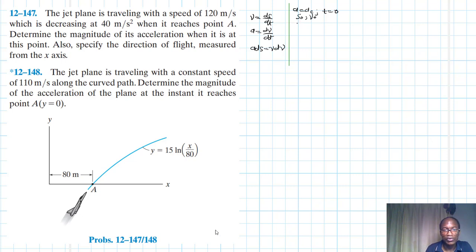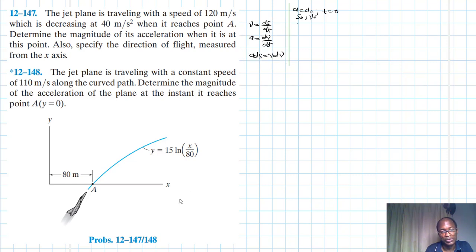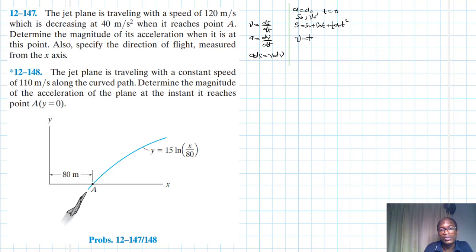With the additional boundary conditions S-naught and V-naught, we are able to derive the following equations: S equals S-naught plus V-naught times t plus one-half times AC times t squared, and V equals V-naught plus AC times t.